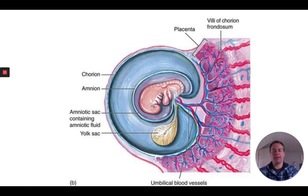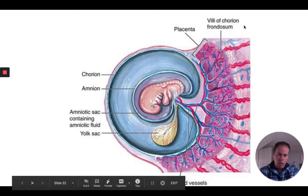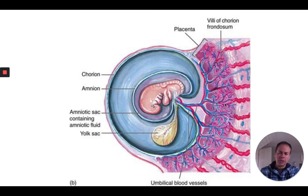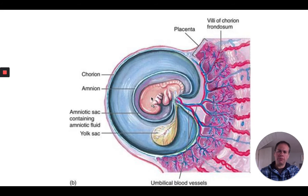A diagram of embryonic development shows the early stage of the embryo within the wall of the uterus. The placenta contains tissue from both the mother and the embryo, with capillaries next to each other allowing exchange of materials that then move through the umbilical cord. The embryo is also surrounded by the amniotic sac filled with amniotic fluid, which cushions the embryo and fetus as it grows. There is also a yolk sac early in development which provides the initial energy for the embryo to grow.